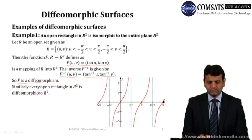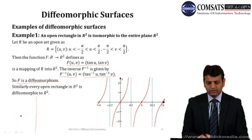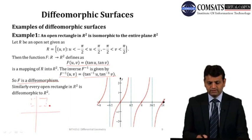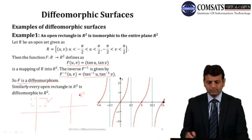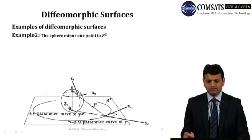Similarly, every open rectangle in R² is diffeomorphic to R². So for any open rectangle, it will be diffeomorphic to the whole plane R². This shows that diffeomorphism does not respect the size of objects — a very small object can be diffeomorphic to a very large one.